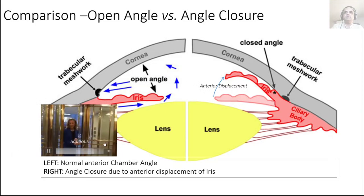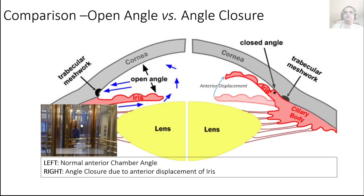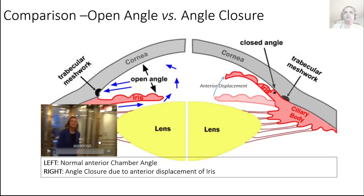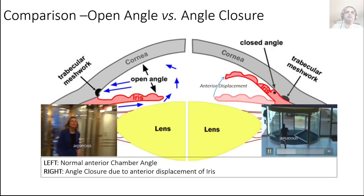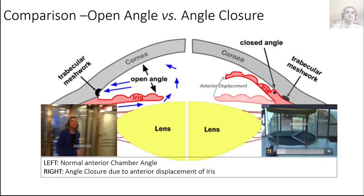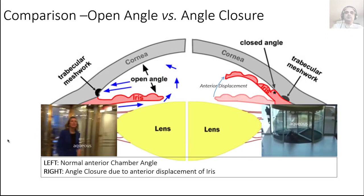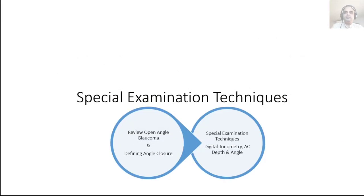This is what anterior displacement of the iris means — it displaces anteriorly towards the cornea from its normal position. In a normal eye, aqueous flows freely through the trabecular meshwork like a revolving door. In angle closure, the aqueous runs into the blocked trabecular meshwork and cannot get out, causing a rise in intraocular pressure.